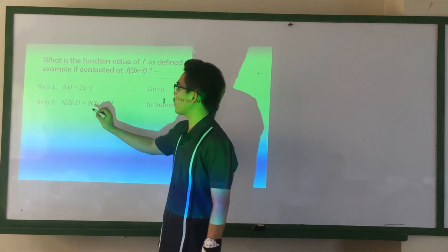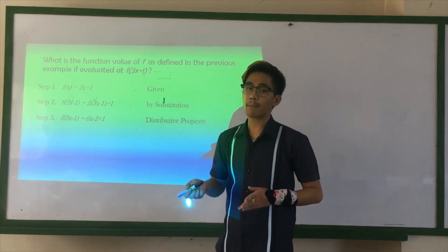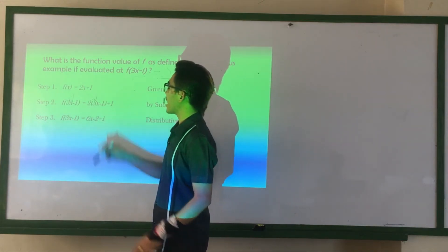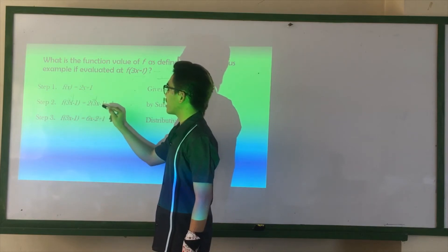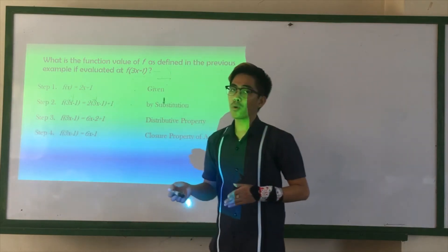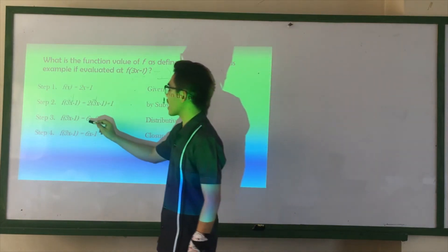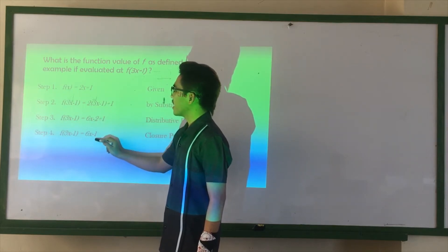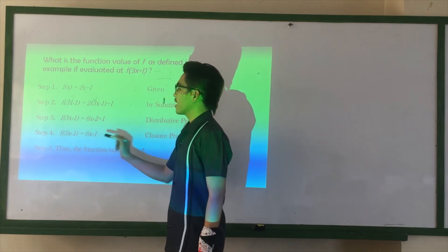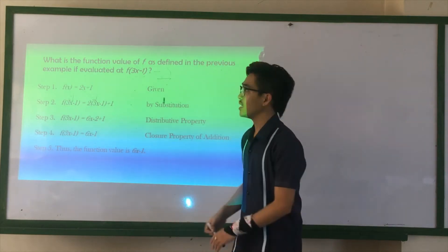So, F of 3X minus 1 equals 2 times (3X minus 1) plus 1. Now, this time, we are going to use the distributive property. So, 2 times 3X, that is 6X. 2 times negative 1, that is negative 2. Copy positive 1. This time, we are going to use the closure property of addition. Just simply add. Just copy 6X and negative 2 plus 1, that is negative 1. So, we have F of 3X minus 1 equals 6X minus 1. Thus, the function value is 6X minus 1.